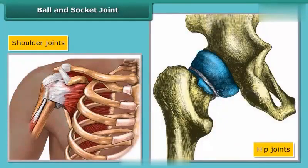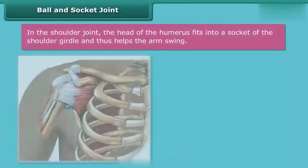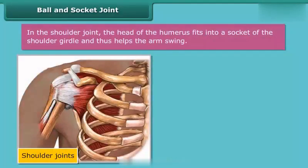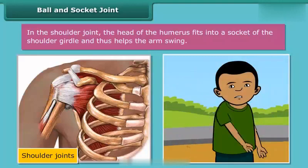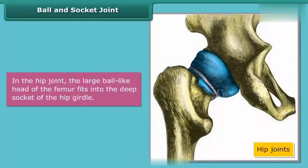Shoulder joints and hip joints are examples of ball and socket joints. In the shoulder joint, the head of the humerus fits into a socket of the shoulder girdle, and thus helps the arm swing. In the hip joint, the large ball-like head of the femur fits into the deep socket of the hip girdle.